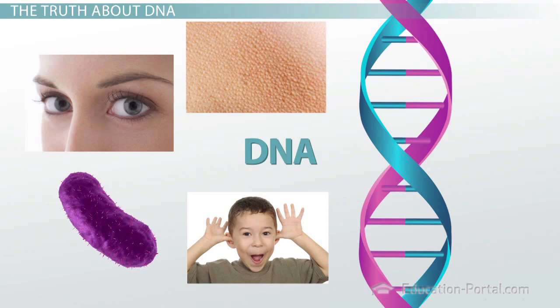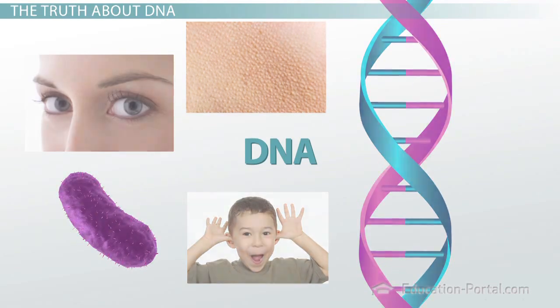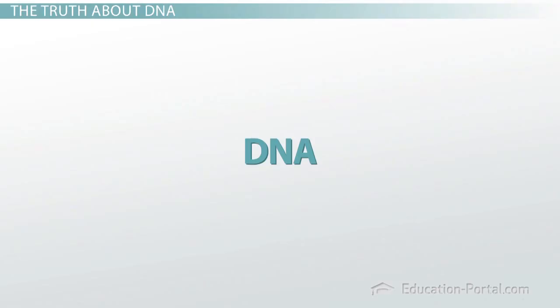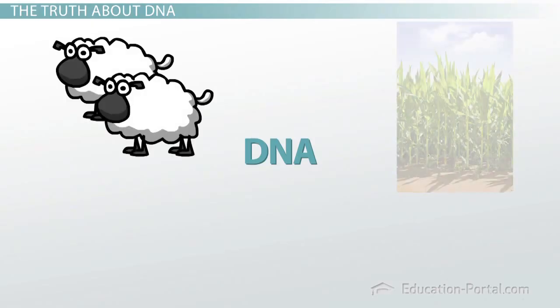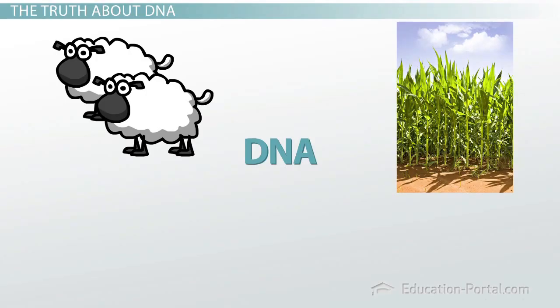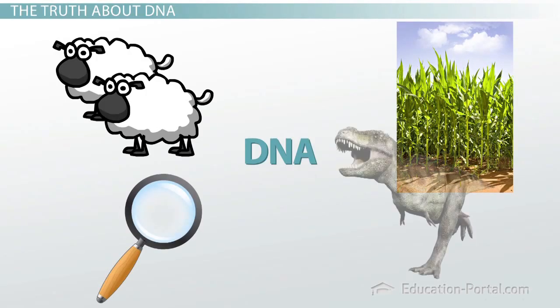DNA is passed down from one generation to the next and with it, all the traits we see in people, plants, and animals. DNA is amazing. By studying and working with DNA, we can clone sheep, improve our crops, determine the culprit in a crime, and maybe even bring back the dinosaurs.